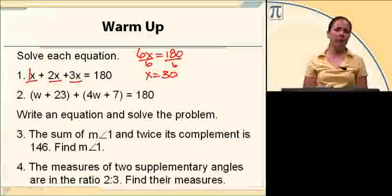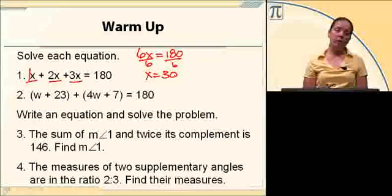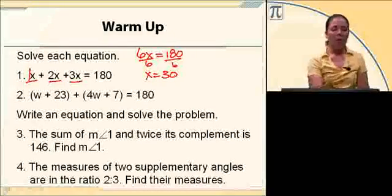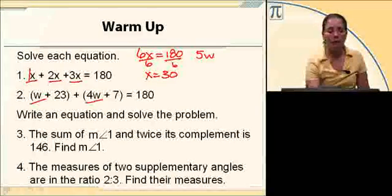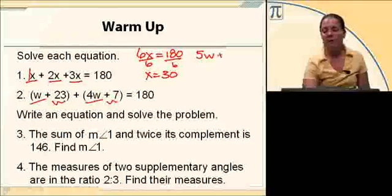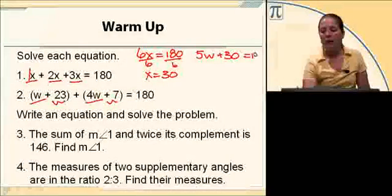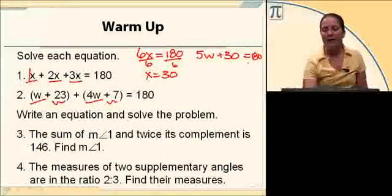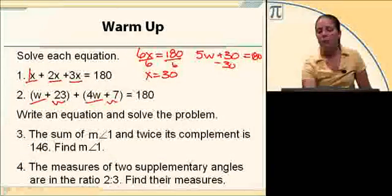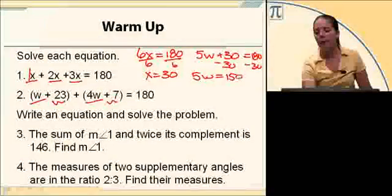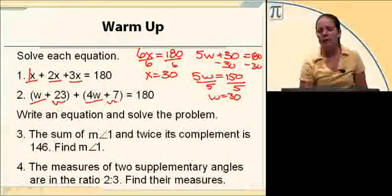Number 2, we have the quantity w plus 23 plus the quantity 4w plus 7 equals 180. Combining like terms, w and 4w is 5w, and 23 and 7 is 30. That equals 180, so I have 5w plus 30 equals 180. Subtract 30 on both sides: 5w equals 150. Divide by 5, w equals 30.